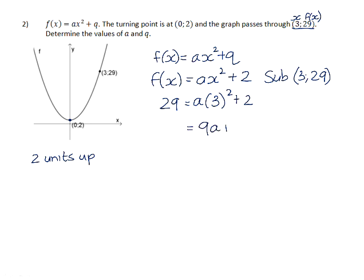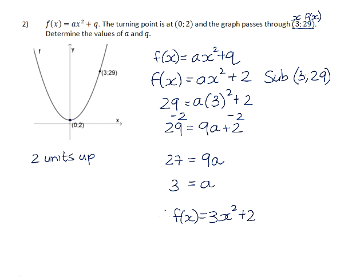That gives us 9a plus 2 is equal to 29. Subtract 2 from both sides gives us 9a is equal to 27. And divide both sides by 9 gives you a equal to 3. So therefore, your final equation for f of x is 3x squared plus 2.